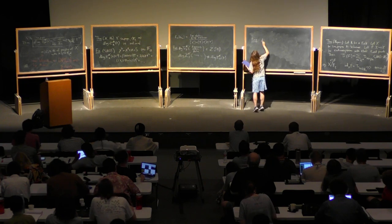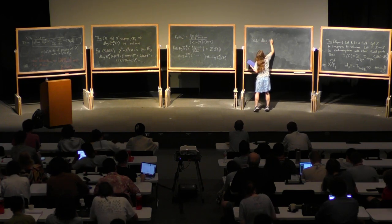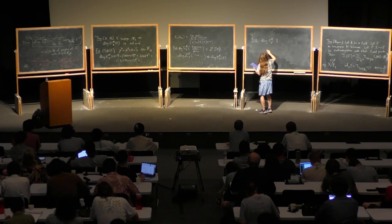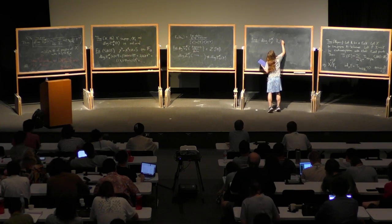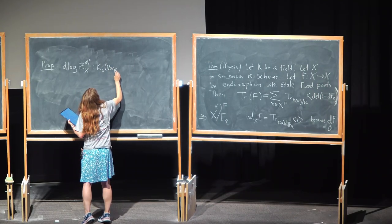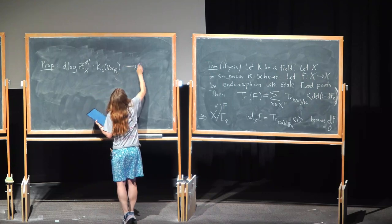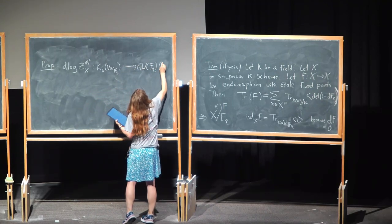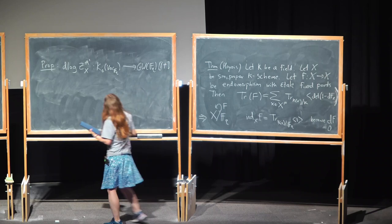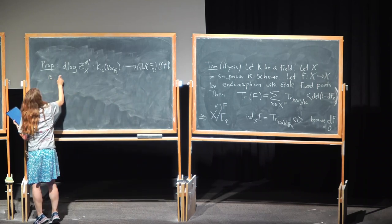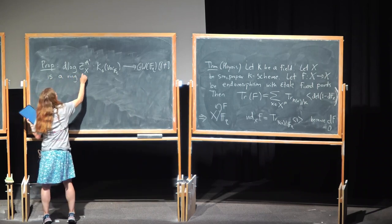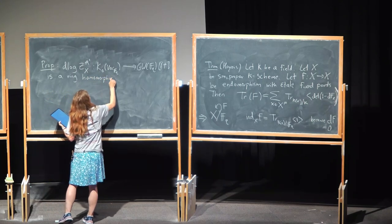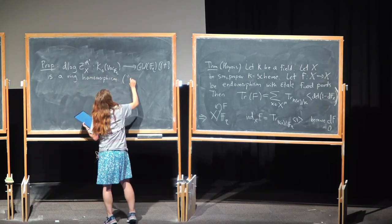However, just like Kapranov's, this is a motivic measure. It defines a ring homomorphism with an appropriate ring structure on K_0(Var) and an appropriate ring structure on power series — so the logarithmic A1 zeta function is a ring homomorphism, which is what motivic measure means.